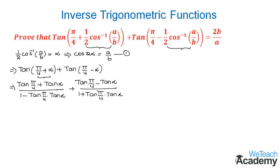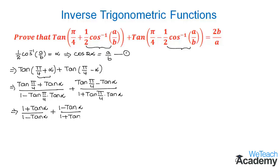Here we already know that tan(π/4) = 1, so let us write 1 in place of tan(π/4). We get (1 + tan α) / (1 − tan α) plus (1 − tan α) / (1 + tan α).